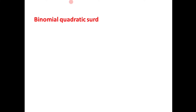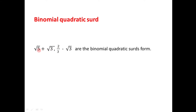Let us learn today about binomial quadratic surds. As the name suggests, binomial means two terms and surds are involved. If there are two surds given which are joined by either addition or subtraction, that is called a binomial quadratic surd. For example, √5 + √3 — here root 5 and root 3 are the two surds joined by addition, so √5 + √3 is called a binomial quadratic surd.